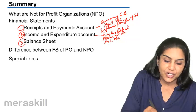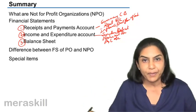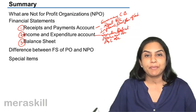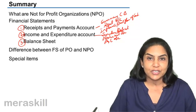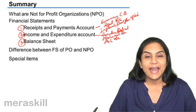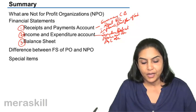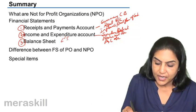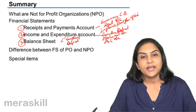Then we prepare a balance sheet with the help of the opening accumulated fund, which is scored from the opening statement of affairs or opening balance sheet. We look at the receipts and payments and see what capital receipts and capital payments were there, make necessary adjustments, and include any outstanding accruals at the end of the year. These are also brought into the balance sheet. The surplus or deficit is added or subtracted from the general fund in the balance sheet.